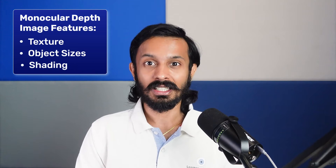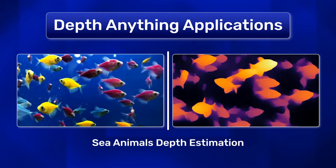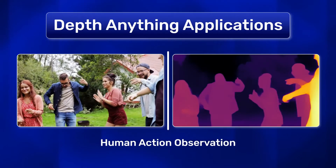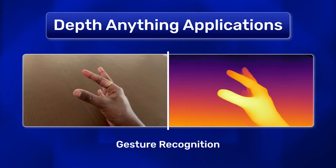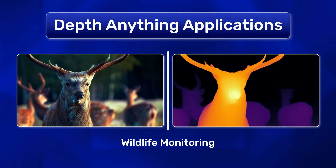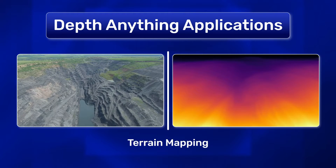Monocular depth perception extracts depth cues from various image features such as texture, object sizes, shading, and perspective. Some of the Depth Anything applications include sea animal depth estimation, human action observation, gesture recognition, wildlife monitoring, urban environments, and terrain mapping.